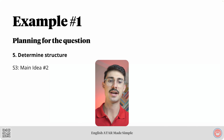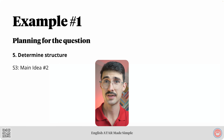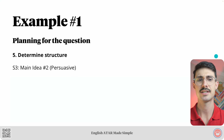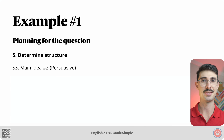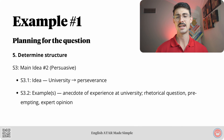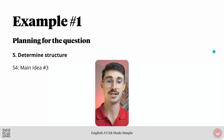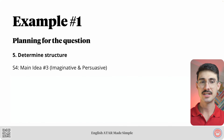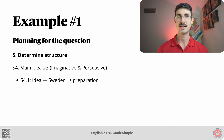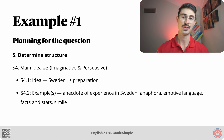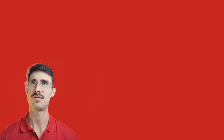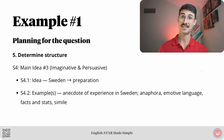Section three refers to main idea number two — the focus in terms of language features is persuasive language features. The main idea is my experience at university and what I learned about perseverance. The example is an anecdote of my experience at uni, employing rhetorical questions, preempting, and expert opinions. Section four is main idea number three, using a combination of imaginative and persuasive language features. The main idea is Sweden and what being in Sweden taught me about preparation. The example will discuss an anecdote of my experience in Sweden, using anaphora, emotive language, facts and stats, and simile.